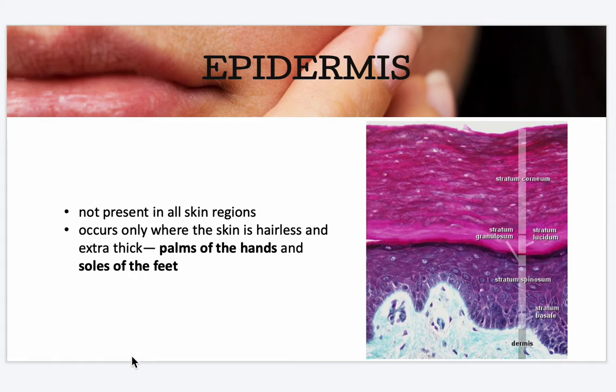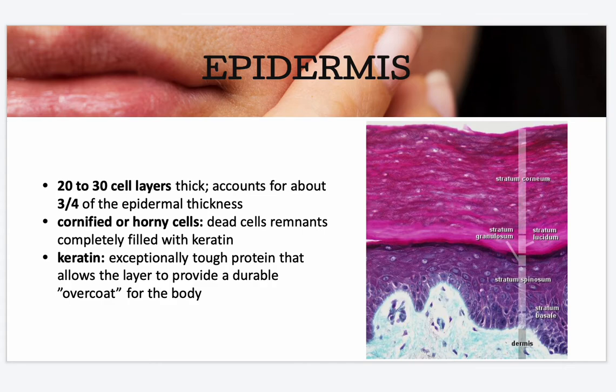The stratum lucidum is not present in all skin regions — it only occurs where the skin is hairless and extra thick. They are only found in thick skin: the palms of the hands and soles of the feet. Next is the stratum corneum.